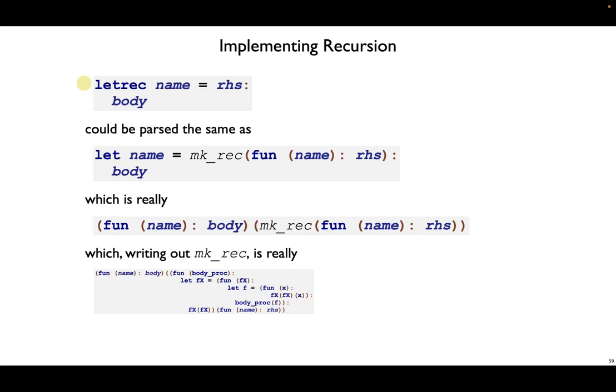Putting it all together, letRec name equals right-hand side with a body parses the same as let name equals makeRec function name with the right-hand side, and then our body.